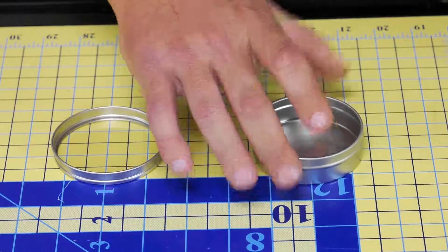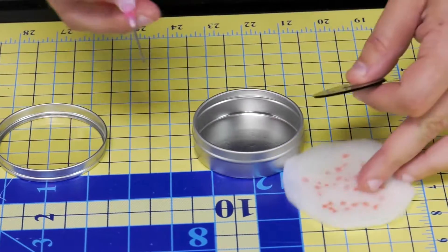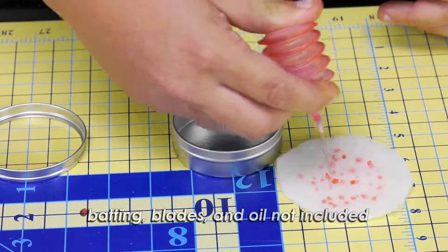What we do is we take our blade keeper, we take some batting, and we cut the batting into a circle. Once I cut the batting into a circle, I take some red rocket wool and I kind of sprinkle it on there like that.